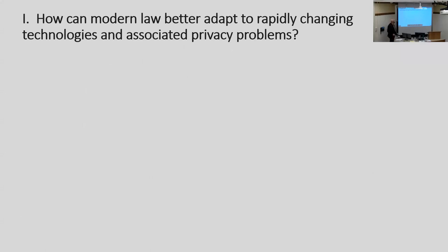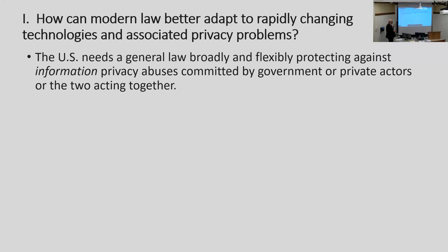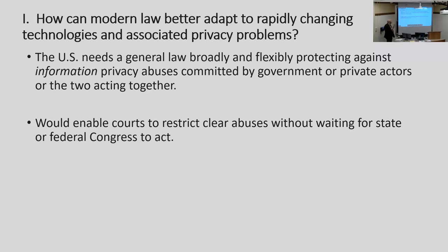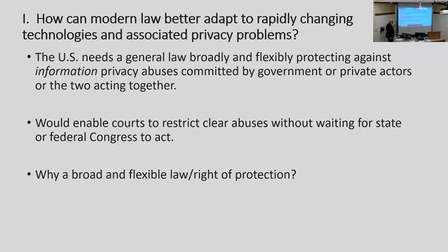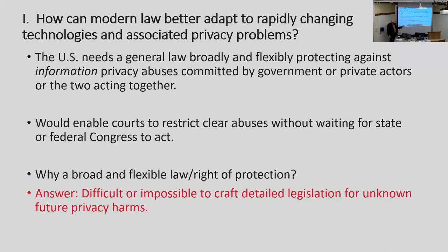How can modern law better adapt to changing tech and privacy problems? I'm arguing we need a general law broadly and flexibly protecting against information privacy abuse, whether it's government or private actors or the two working together. This would enable courts to restrict clear abuses without waiting for state or federal Congress to act. Congress is constantly plugging privacy holes with legislation on a lot of issues they don't get to because it's hard to pass a law. Why broad and flexible? It's difficult or impossible to craft detailed legislation for unknown future privacy harms.